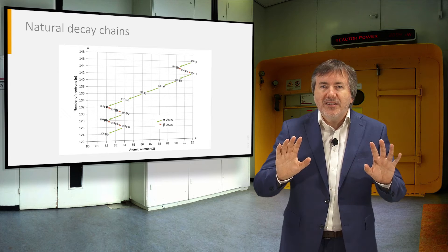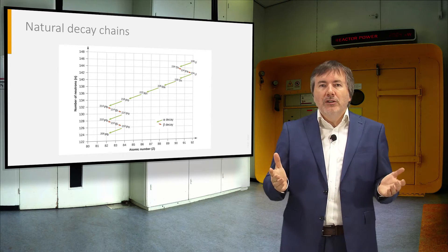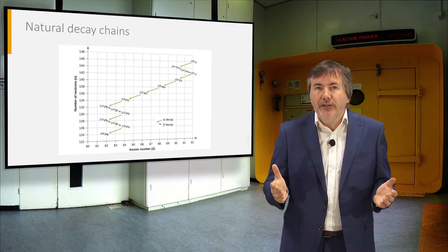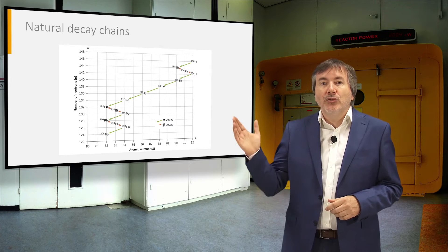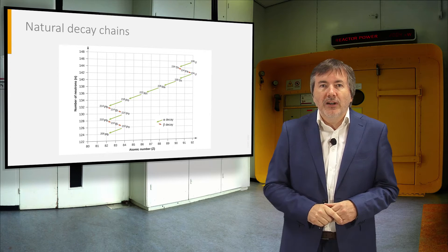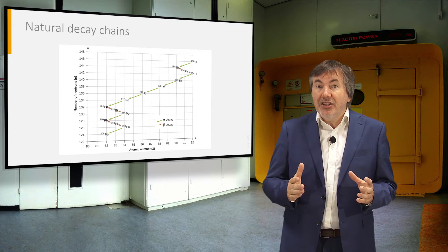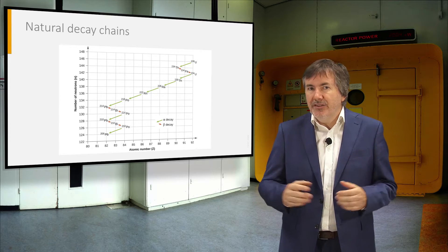Radioactivity is omnipresent in nature. In soil we find for example uranium-238, which decays to a series of other unstable nuclides. This decay chain stops when stable lead is reached.